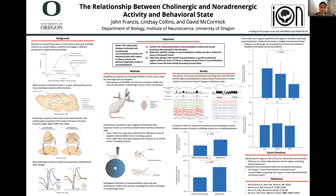John Francis introduced his talk on the relationship between cholinergic and noradrenergic neuromodulatory activity and behavioral state in mice. An animal's ability to engage with a task is highly variable, but there is an optimal arousal state for peak performance. Arousal encompasses both brain state — the physiological activity of the brain — and behavioral state — the observable behavioral patterns and movements. Moment-to-moment fluctuations in arousal influence an animal's ability to perform perceptual tasks, and these fluctuations are influenced by neuromodulatory systems.